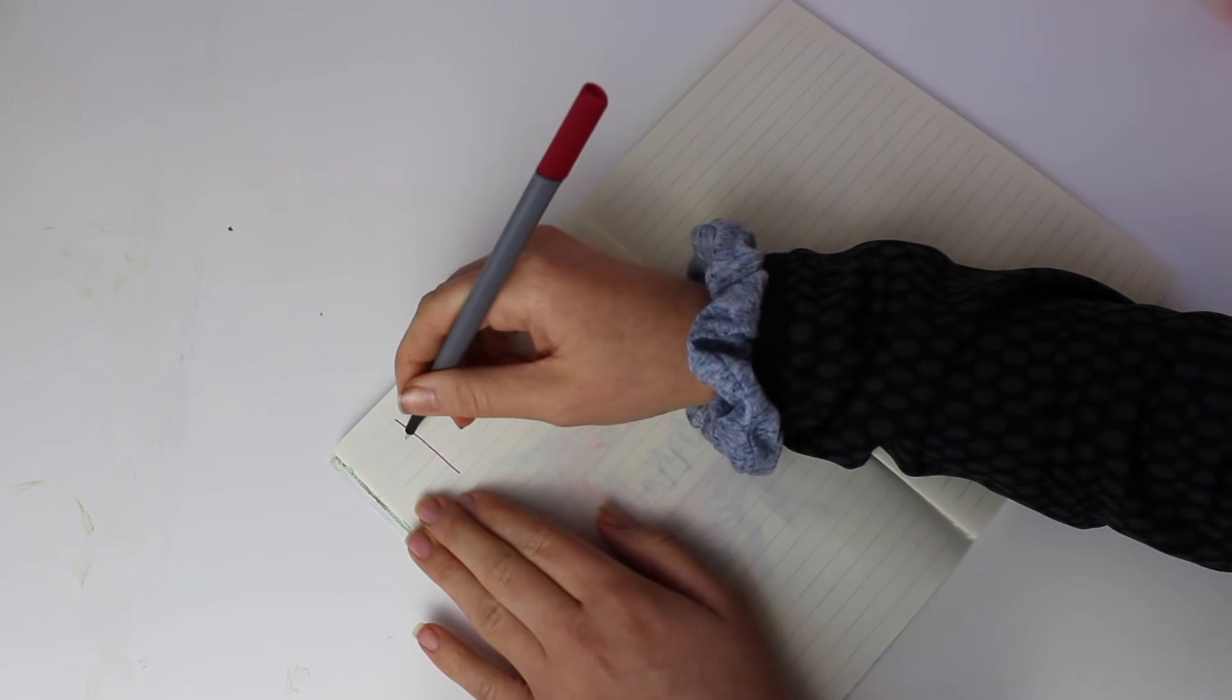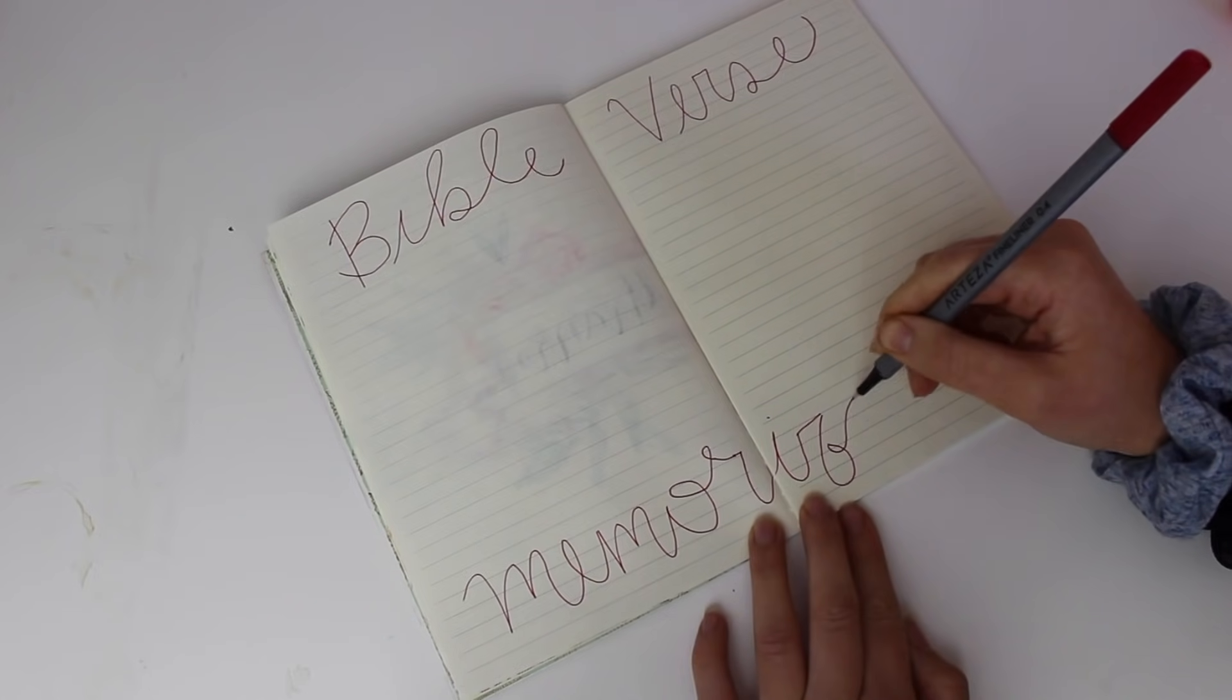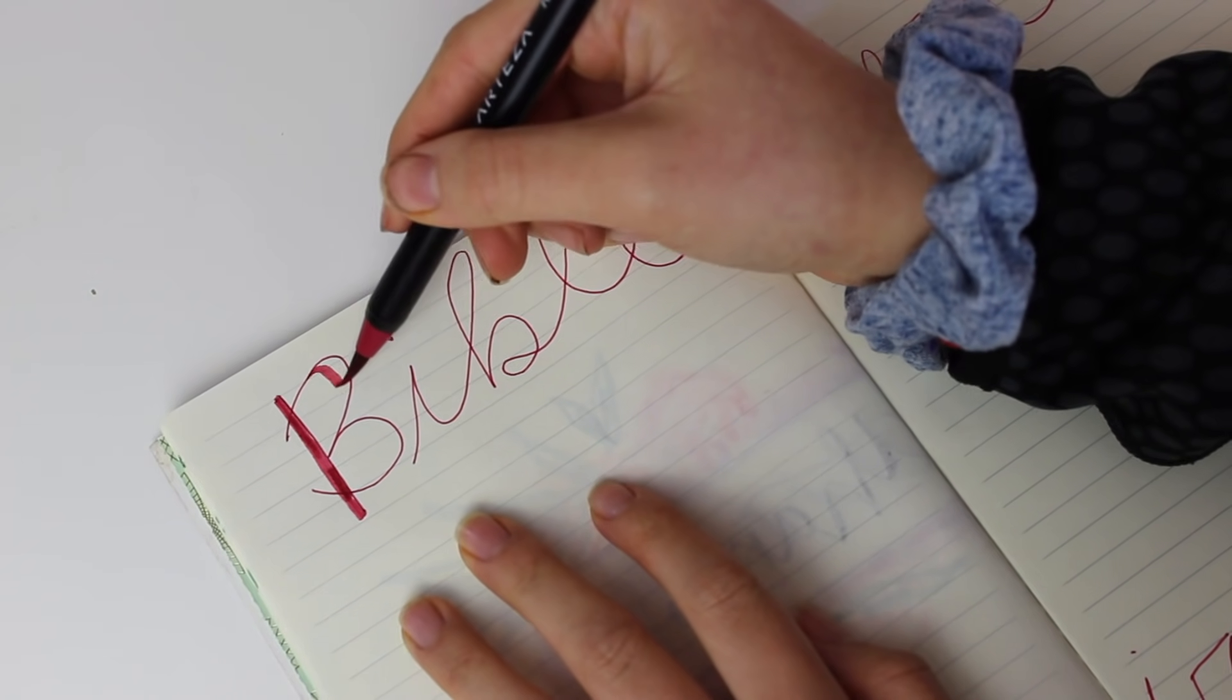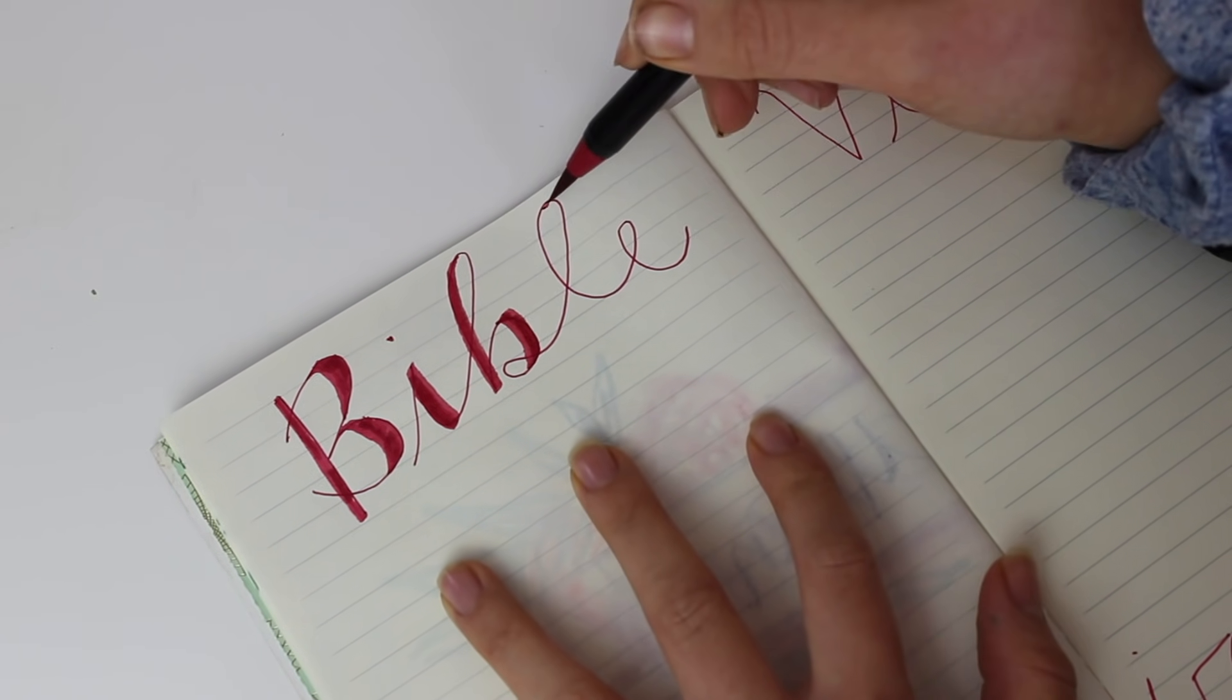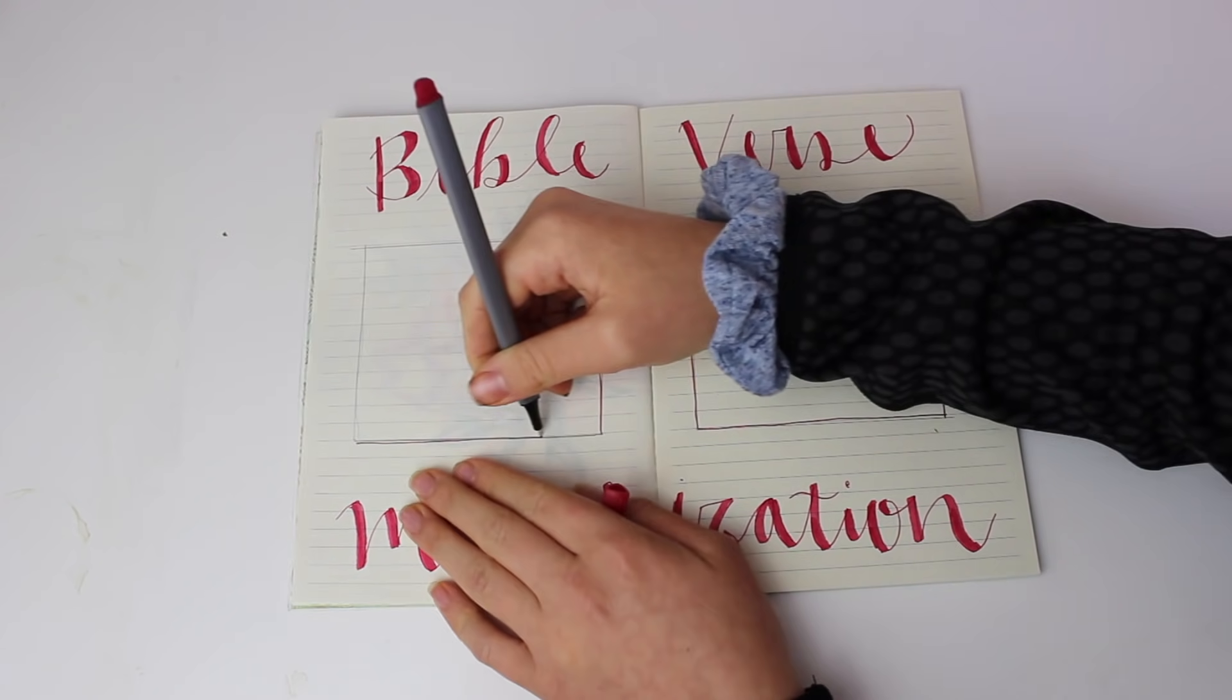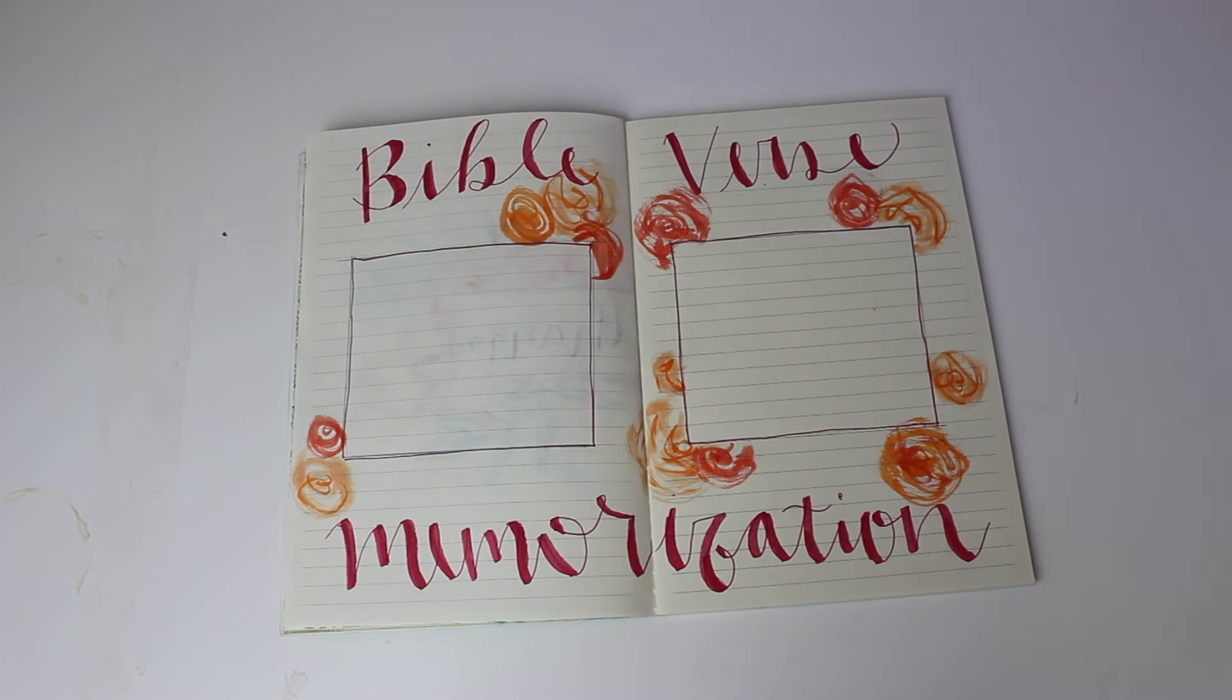The next section is Bible memorization. Now, I kind of made it my goal to memorize two Bible verses in a month. And I used to have memorizing four in a month, but I kind of failed at it. So now I'm going to try to do two. But it's important to write it down, especially if you want to memorize it. So I have it in this section of my bullet journal.